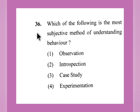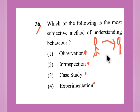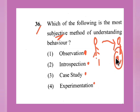Question number 36: Which is the most subjective method of understanding behavior — observation, introspection, case study, or experimentation? Observation means one person observing another. Introspection means the same person introspecting about themselves — that is subjective. Case study involves one person studying another's case. Experimentation involves many persons. Introspection — option number 2 — is the most subjective method.